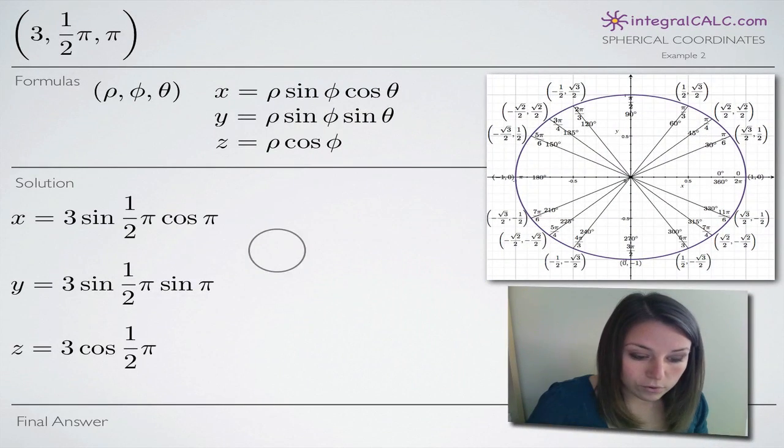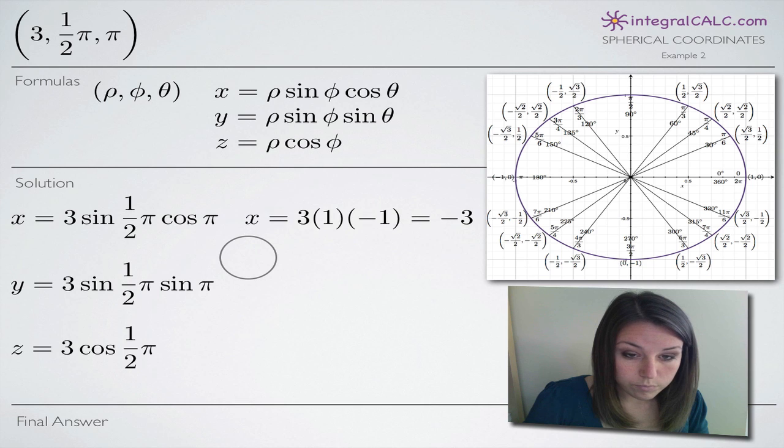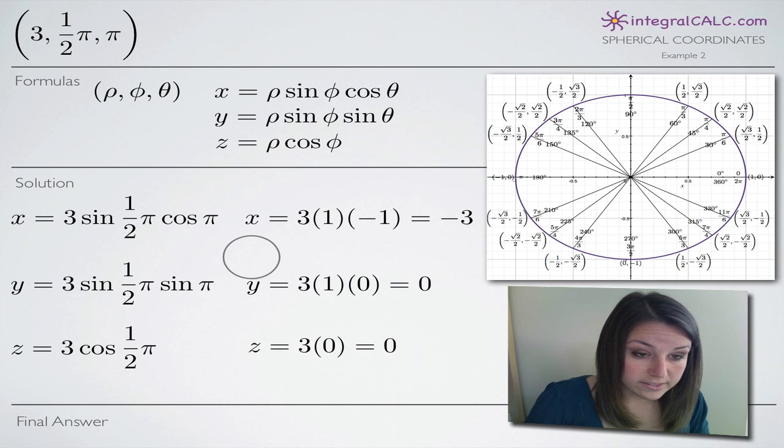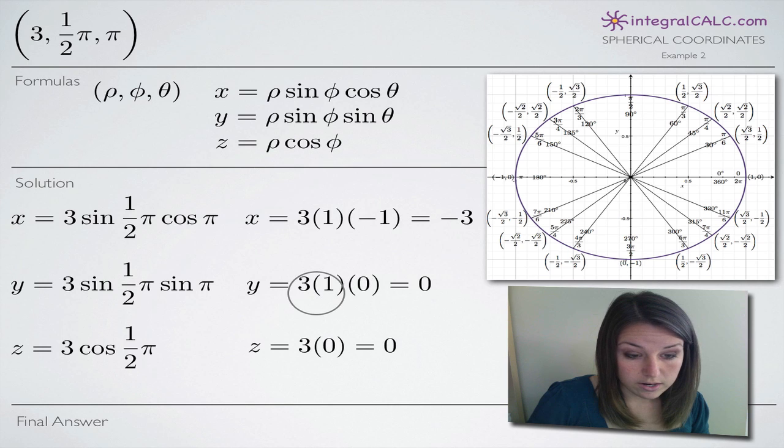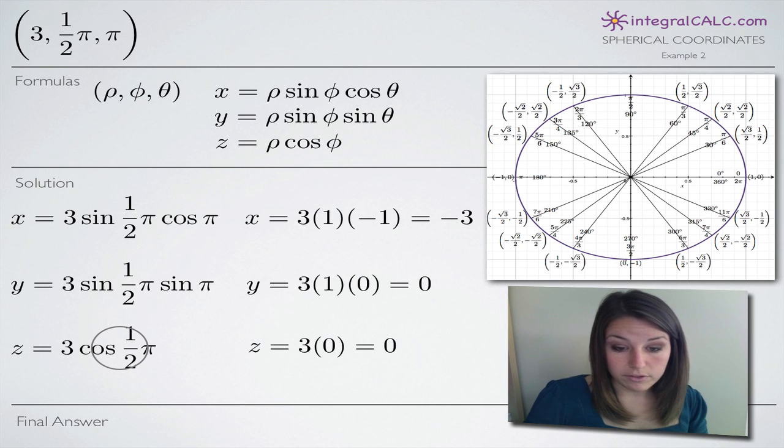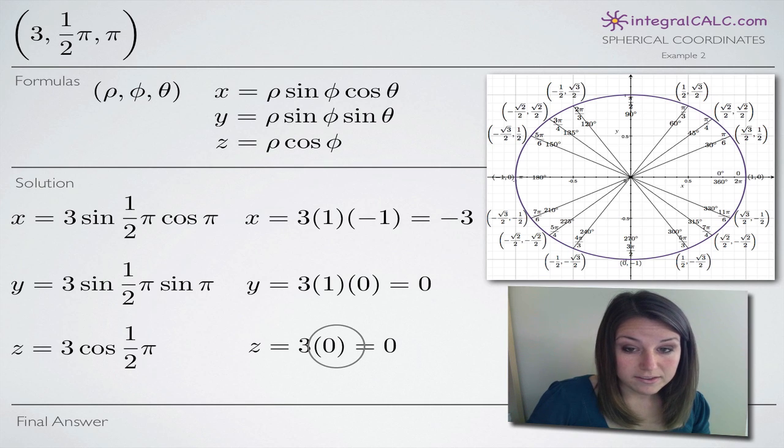So if we jump back over here to our equations and we bring these in here, we can see sine of pi over 2 is the y-coordinate, which was 1. So we plug in 1 here. And cosine of pi over 2 was 0, x was equal to 0 along the y-axis there on the unit circle. So we plug in 0 here.